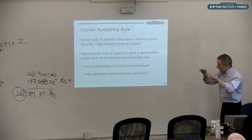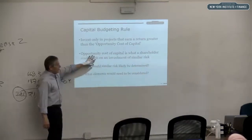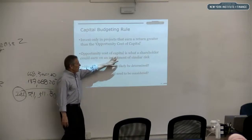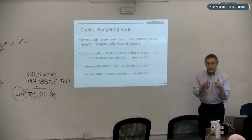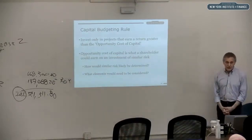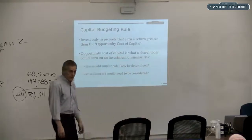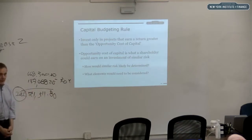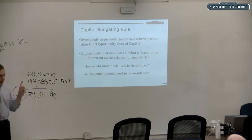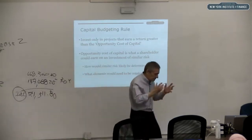The opportunity cost of capital is what could have been earned on an equivalent risk investment — you're not just making a number up; you're looking at what is the common rate of return on projects of that sort. If I'm valuing a gold mining operation, what's a typical rate of return on gold mining operations? If I'm looking at an airplane leasing program, what's a typical rate of return on airplane leasing? The same company will often use different opportunity costs of capital for different types of projects.